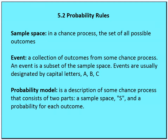Let's define some terms with respect to probability, and then we'll go through an example so you can relate these definitions. Sample space in a chance process is the set of all possible outcomes. An event is a collection of outcomes from the sample space, or set from some chance process. An event can be a unique event, a singular event, or it can be a subset of different outcomes from a sample space.